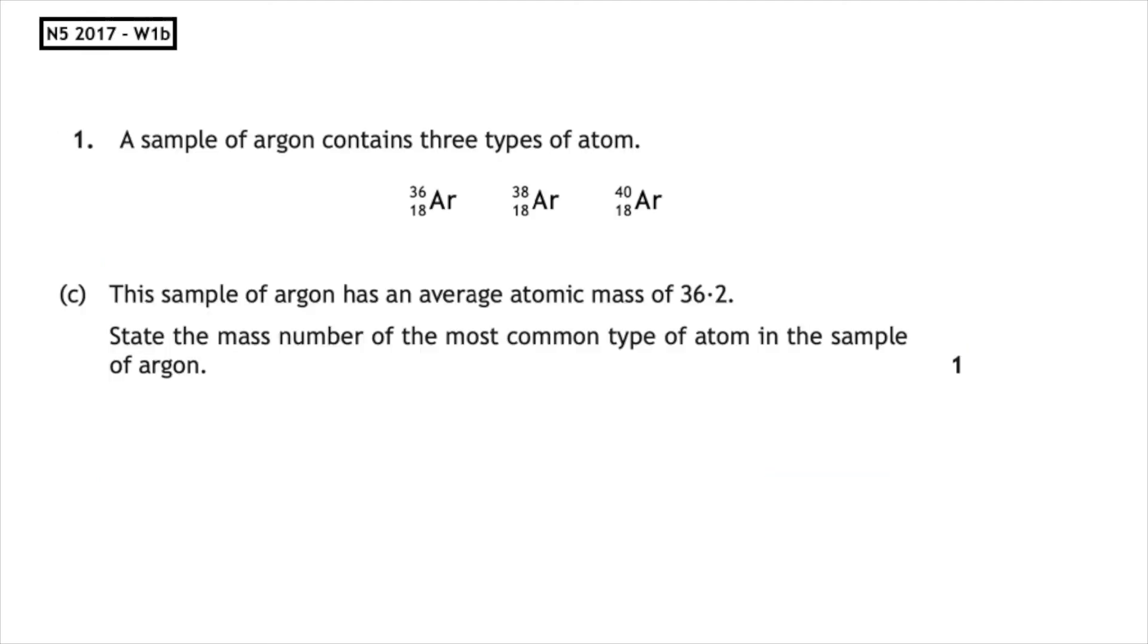This past paper question is from the National 5, 2017, written 1b. A sample of argon contains three types of atom: argon 36, argon 38, and argon 40. This sample of argon has an average atomic mass of 36.2. State the mass number of the most common type of atom in the sample of argon.